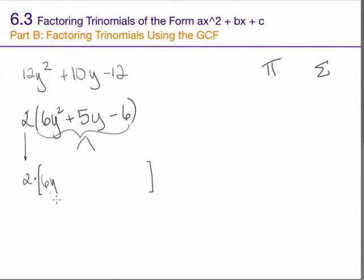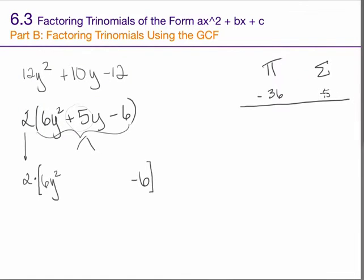To rewrite this trinomial with the middle term split up, I first need to find the product of the first and last terms. 6 times negative 6 is negative 36. The sum I'm going to be aiming for is positive 5.